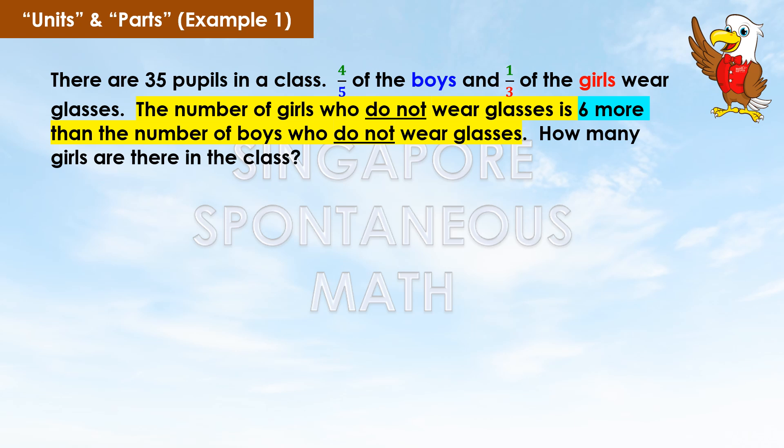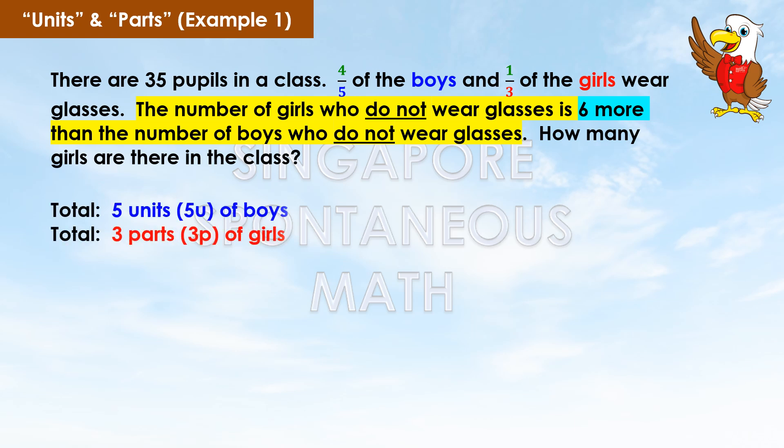As the number of boys is not the same as the number of girls, we use units to represent the boys and parts to represent the girls. There are five units of boys in total and three parts of girls in total.